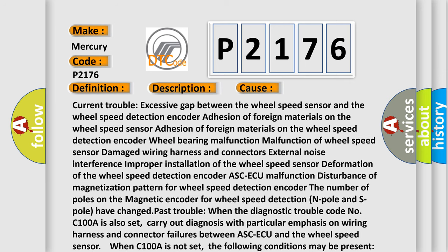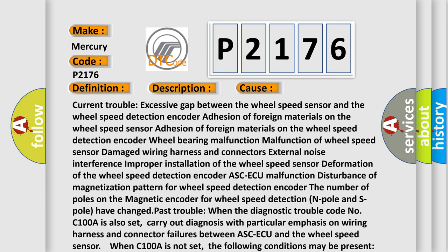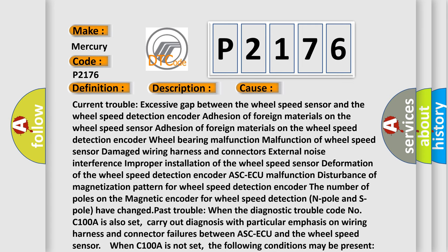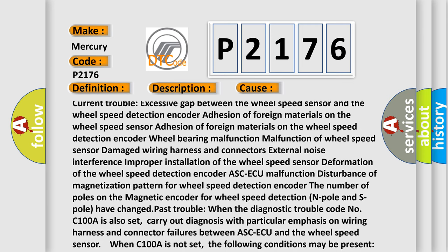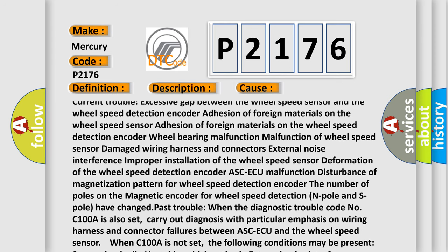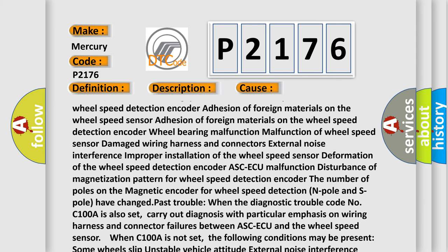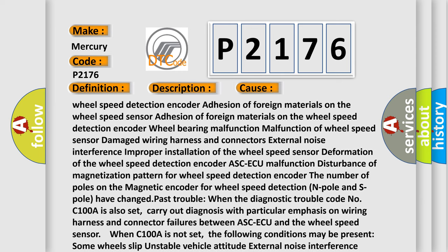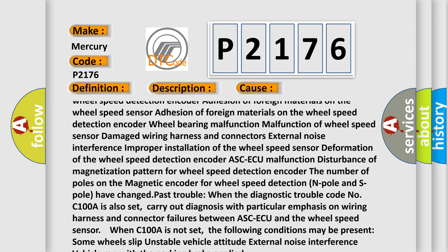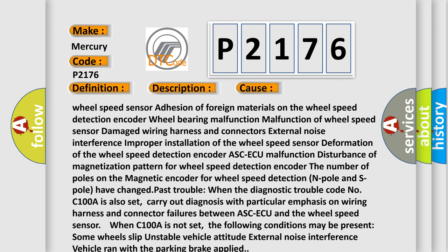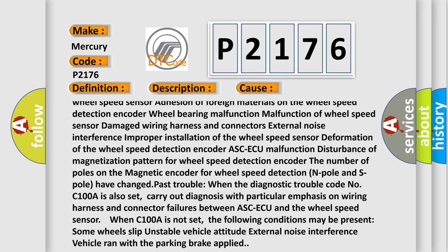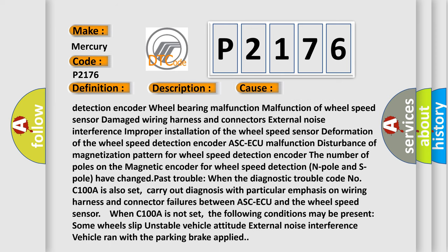Current trouble: Excessive gap between the wheel speed sensor and the wheel speed detection encoder, adhesion of foreign materials on the wheel speed sensor, adhesion of foreign materials on the wheel speed detection encoder, wheel bearing malfunction, malfunction of wheel speed sensor, damaged wiring harness and connectors, external noise interference, improper installation of the wheel speed sensor, deformation of the wheel speed detection encoder.